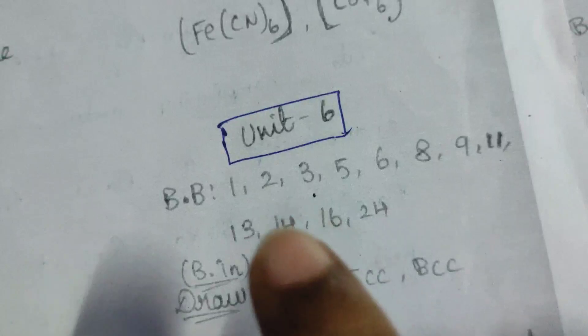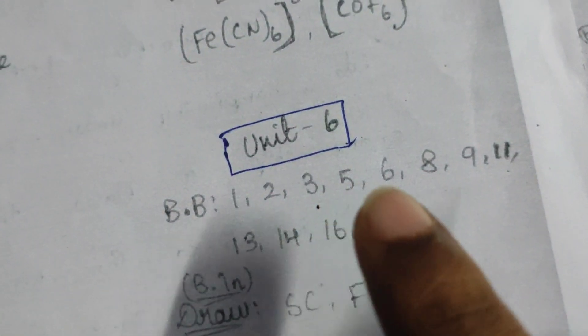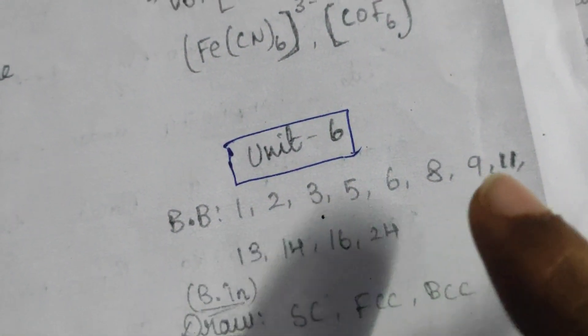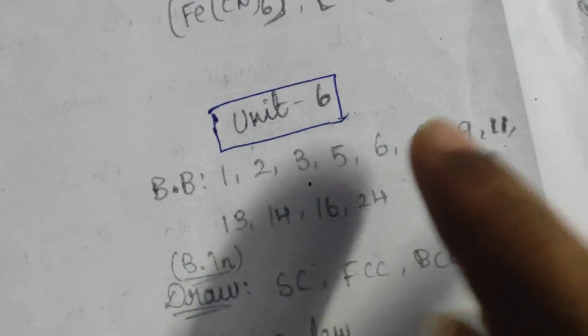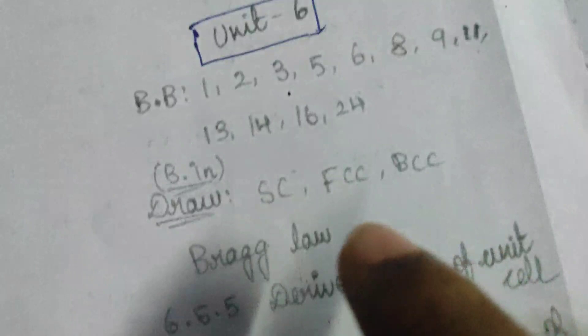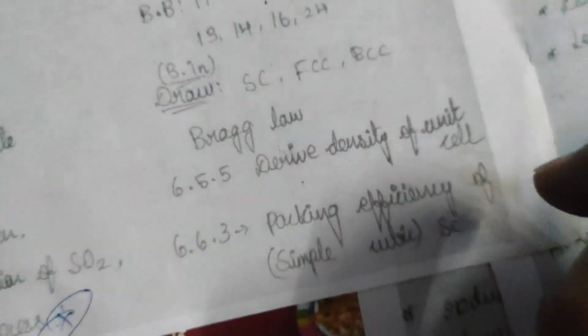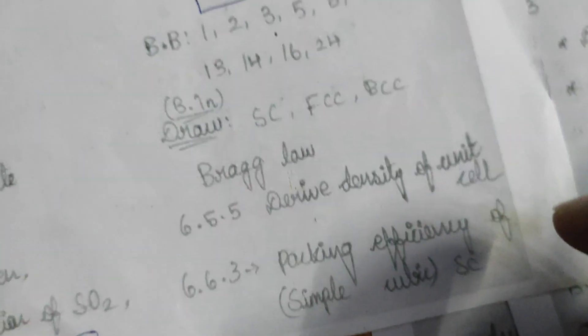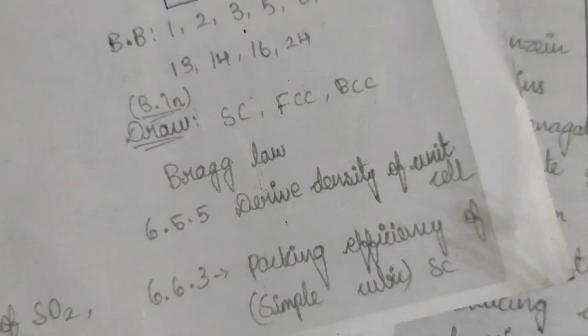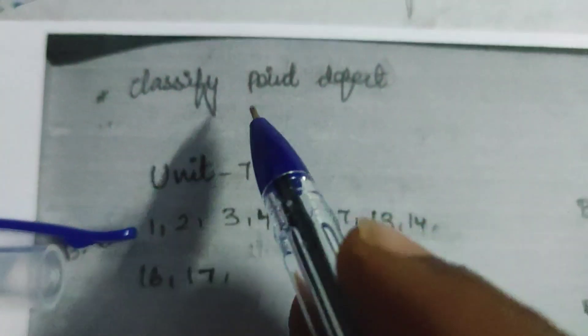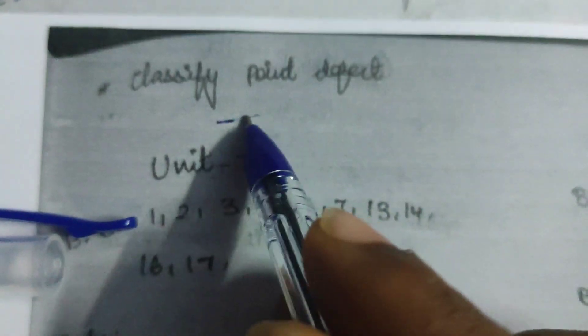Unit 6 book back: 1, 2, 3, 5, 6, 8, 9, 11, 13, 14, 16, 24. Booking — check it. Classified Point Defect. This is Unit 6.